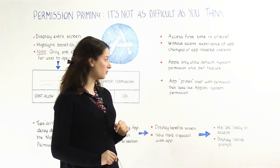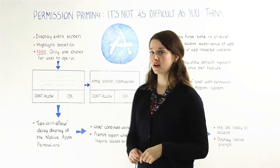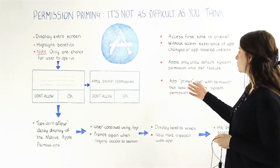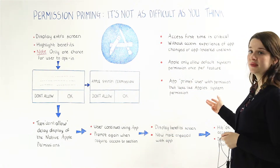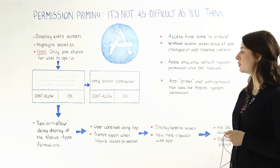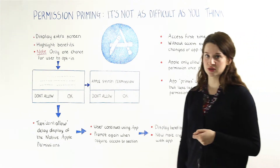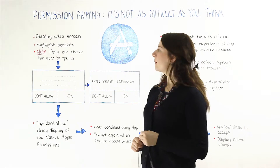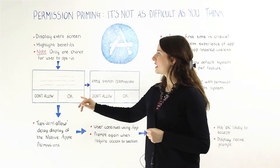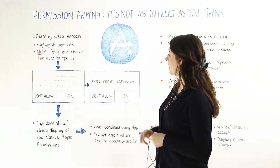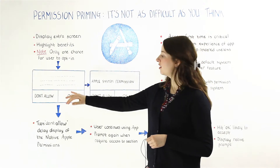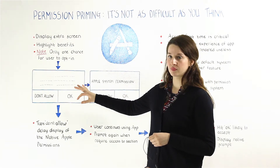Today we're going to look at permission priming and what that is. Permission priming is when an app primes a user with a permission that looks just like the Apple system permission. What it does is display an extra screen that looks like the Apple system permission, and on it it highlights the benefits of why they should opt in.